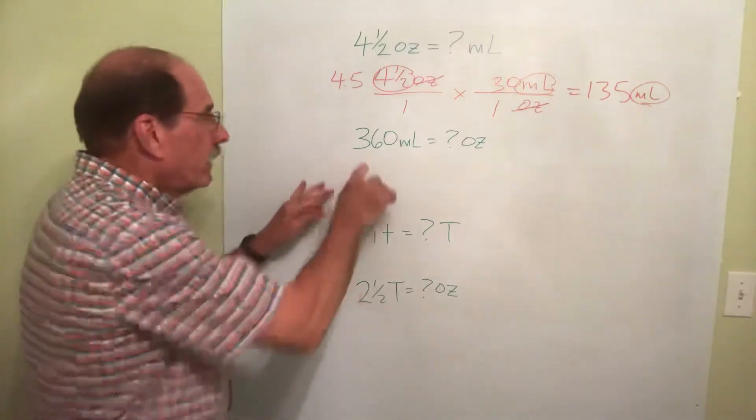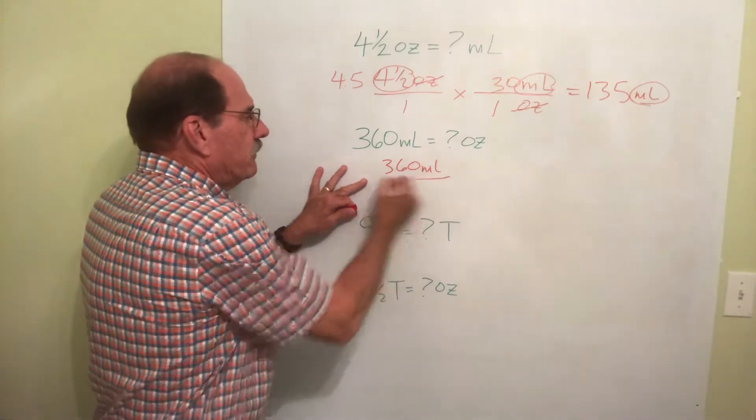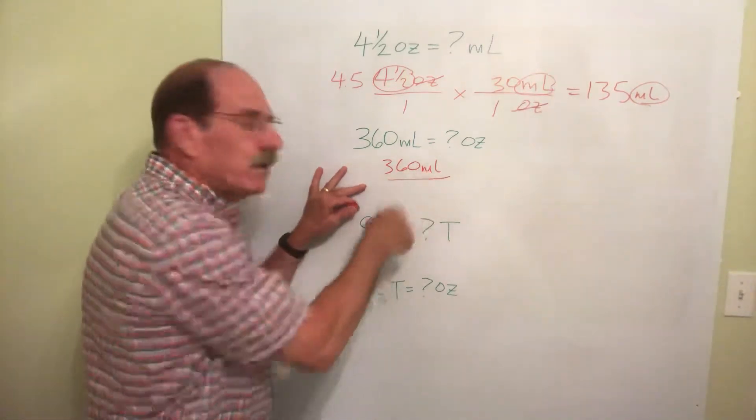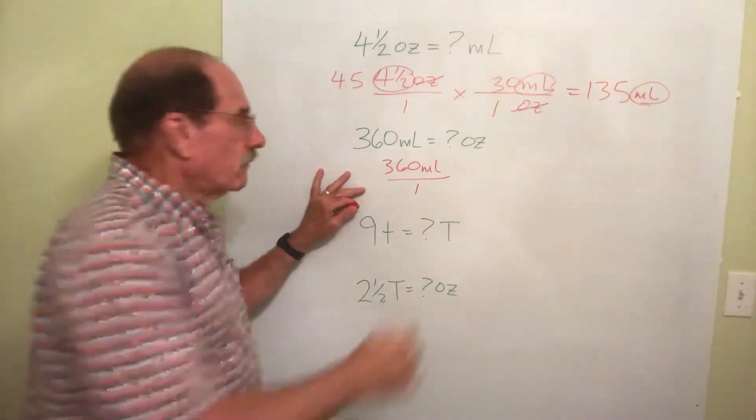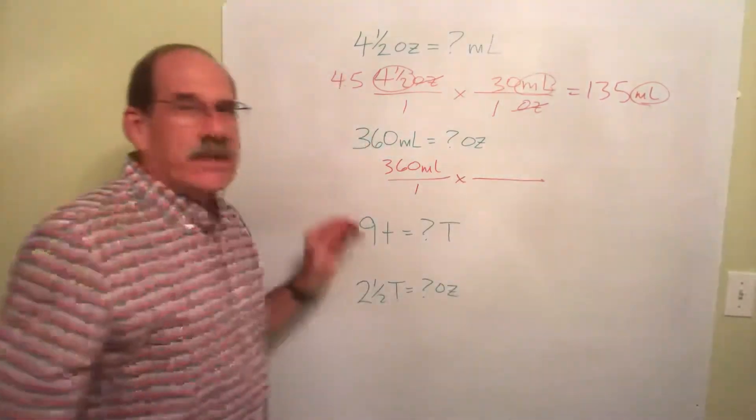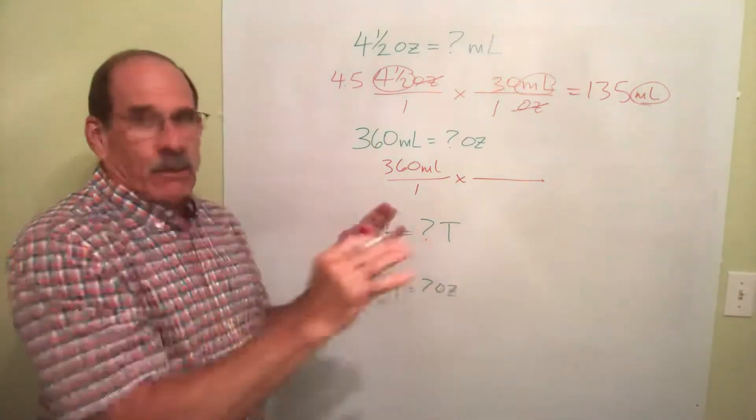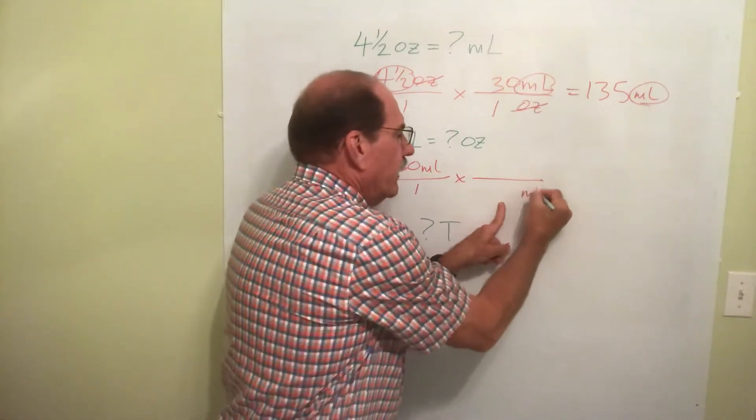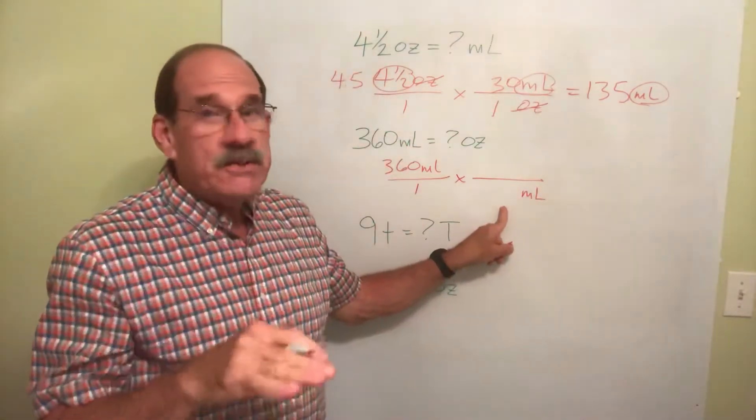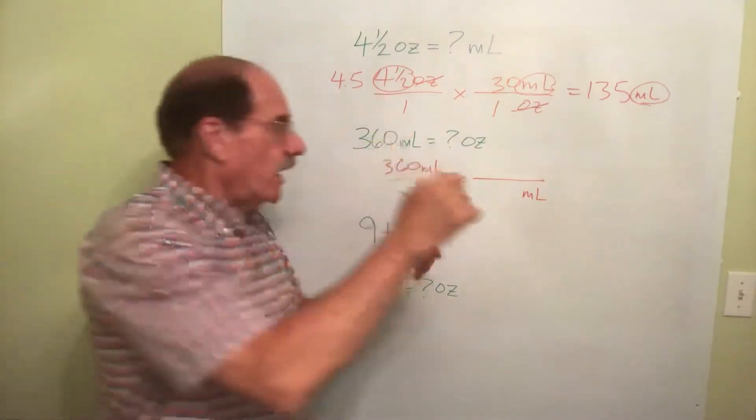Same pattern. What I know, 360 milliliters. Write it down and put the word there, not just a number. Put it over one. Multiply by a second fraction, which we'll put up there in a moment. What goes next? Milliliters up here, milliliters down there. Don't put numbers in place yet. What I'm looking for, ounces, goes on top. Ounces goes on top.